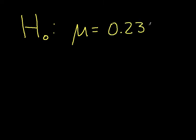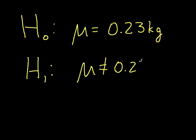So we'll pose this as the following hypothesis test. Hypothesis zero is that the population mean, and in this case the population is the population of all things produced by this injection molding machine, so the population mean is 0.23 kilograms. And hypothesis one will be that the population mean is not 0.23 kilograms.